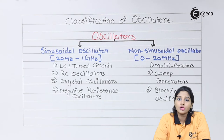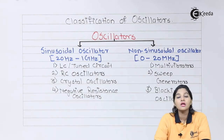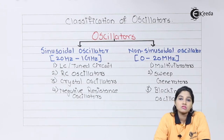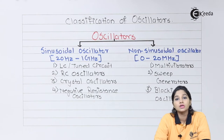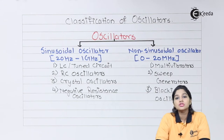The last type of sinusoidal oscillator is the negative resistance oscillator. It uses the negative resistance characteristics of tunnel diodes, and therefore tunnel diode oscillators are the example of negative resistance oscillators.